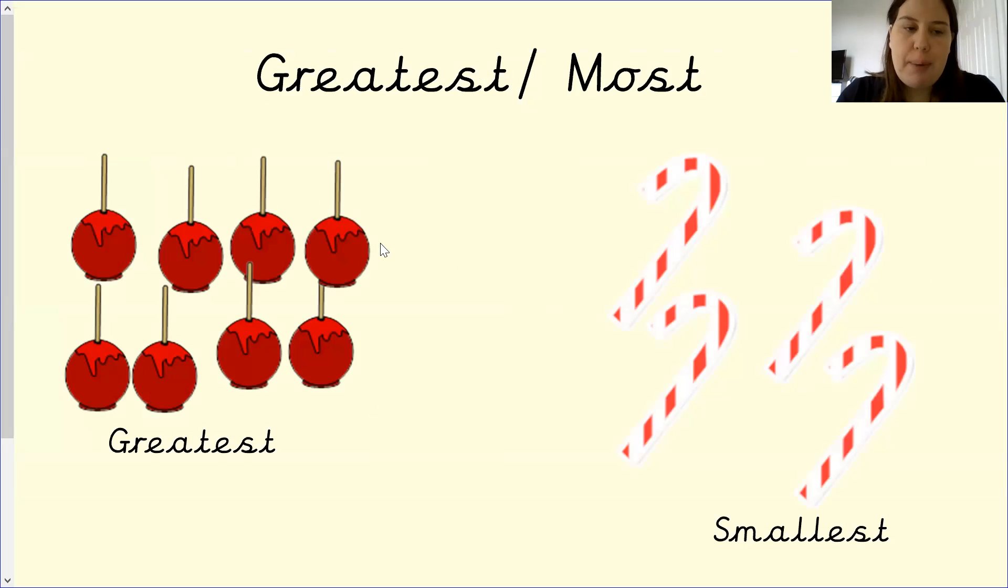So let's have a look at the toffee apples. We have one, two, three, four. So we know that the toffee apples is the greatest amount, whereas the sugar canes is the smallest amount.